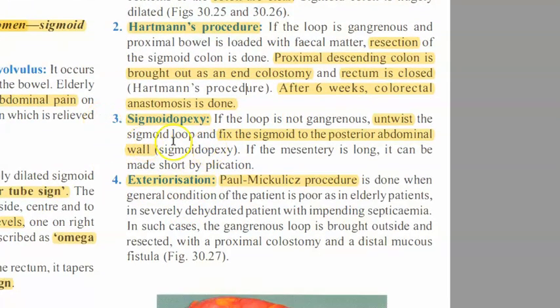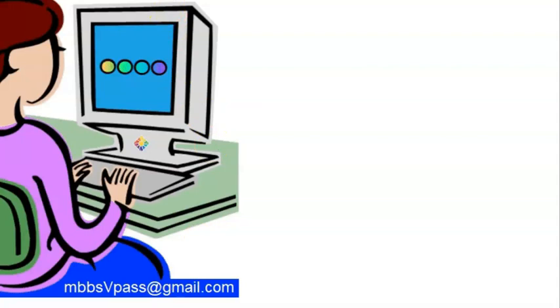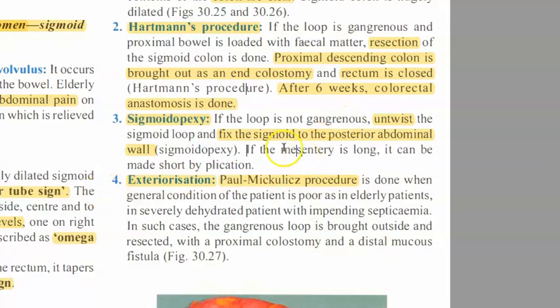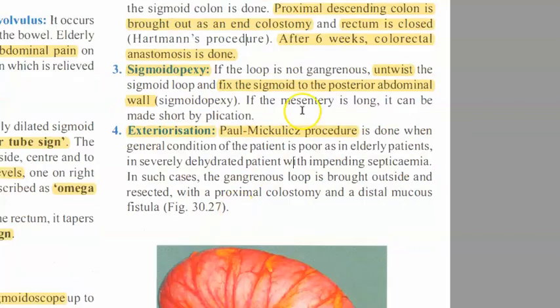Sigmoidopexy: if the loop is not gangrenous, you untwist the sigmoid loop and fix the sigmoid to the posterior abdominal wall. Fixing the sigmoid to the posterior abdominal wall is sigmoidopexy - the 'P' helps you remember posterior wall. Just untwist it and attach it to the posterior abdominal wall so it doesn't twist again. If the mesentery is long, you shorten it to reduce the freedom to twist.